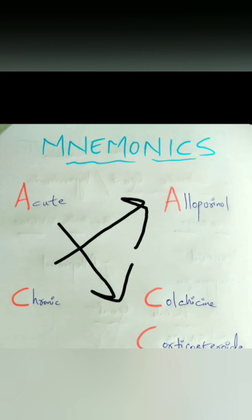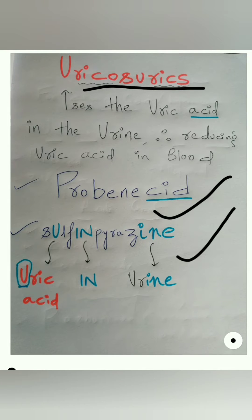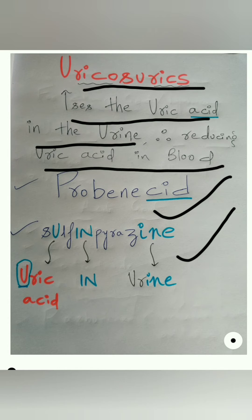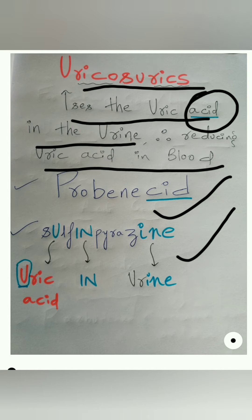For acute gout it is colchicine and corticosteroids. Now, do uricosurics increase the uric acid in the urine, thereby reducing the uric acid in the blood? Yes — so the function of uricosurics is to increase uric acid in urine. Notice the word 'acid' appears in both 'uricosuric' and 'probenecid' — you can correlate 'cid' with 'acid' to remember that probenecid is under uricosurics.